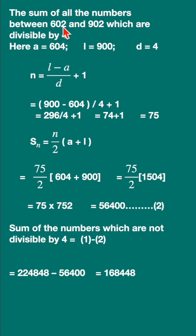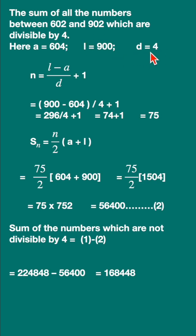Now let us find the sum of integers between these two which are divisible by 4. The first number divisible by 4 is 604, and the last number divisible by 4 before 902 is 900. The common difference is 4, since after every 4 numbers the next divisible number appears. Substituting these values, the number of terms is 75 and the sum Sn is 56400.